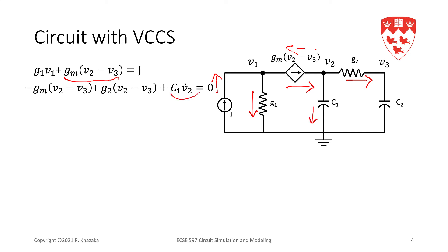And the last equation is KCL at node 3. So, that is the current in the resistor, the current leaving node 3 through the resistor G2, which is minus G2 V2 minus V3. And the current in the capacitor C2, which is C2 V3 dot.